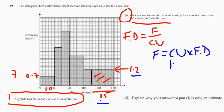So 1.2 multiplied by 15 equals 18. So there must be 18 in this section.